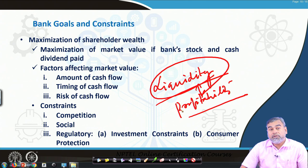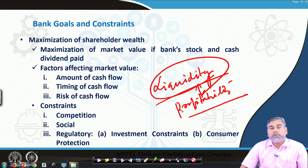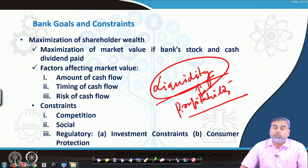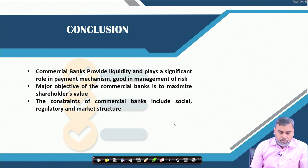The major constraint banks always face is the regulatory constraint. There are many regulatory constraints, but prominent ones include investment constraints — banks cannot invest their money wherever they want; there are restrictions imposed by the regulator. They cannot invest unlimited money in the equity market, and there are many consumer protection laws made by the regulator. To comply, banks may have to conduct certain business that may not be profitable, but they are bound to do so for the larger societal benefit.